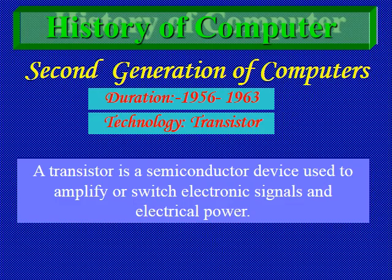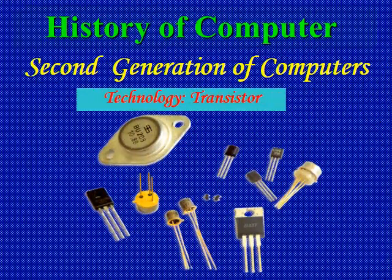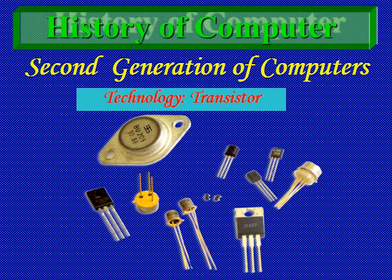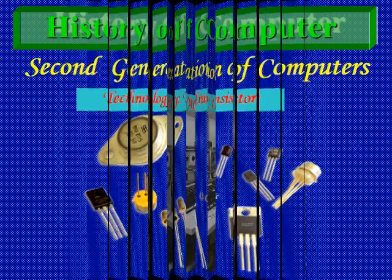A transistor is a semiconductor device used to amplify or switch electricity, controlling the flow of electricity in devices. You can see different images of transistors on your screen — they come in different shapes but are smaller compared to the vacuum tube.